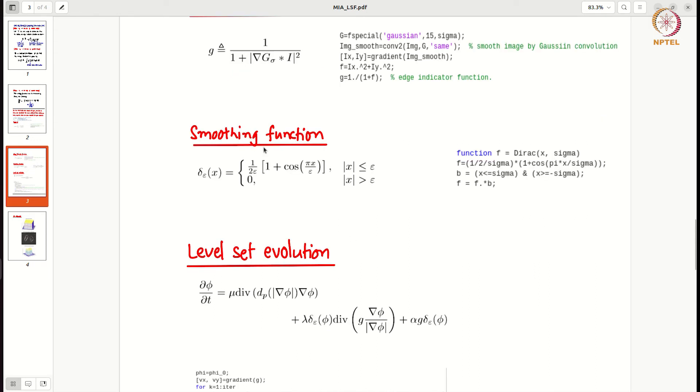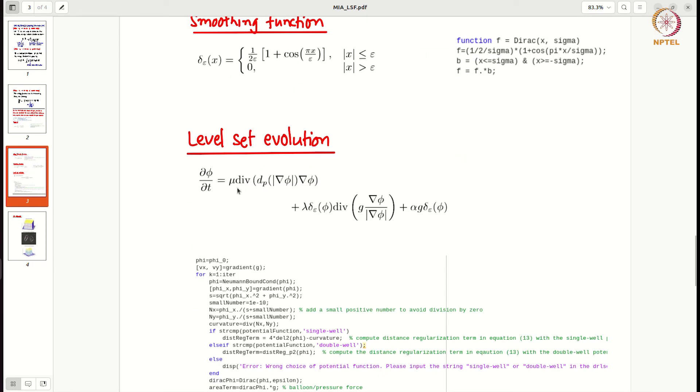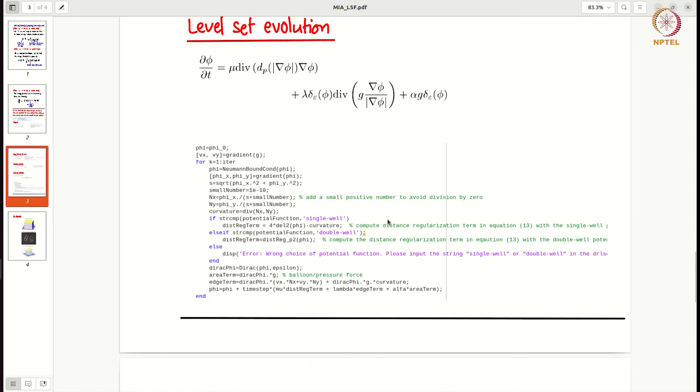And this level set evolution equation you see here, you have some additional terms also, and their weights are mu, lambda, and alpha. So if you want to shut down some of the terms you can just set alpha equal to 0 or mu equal to 0. Then this is the evolution, the numerical solution for this. So the idea is whatever you have been taught is already present in this code also.